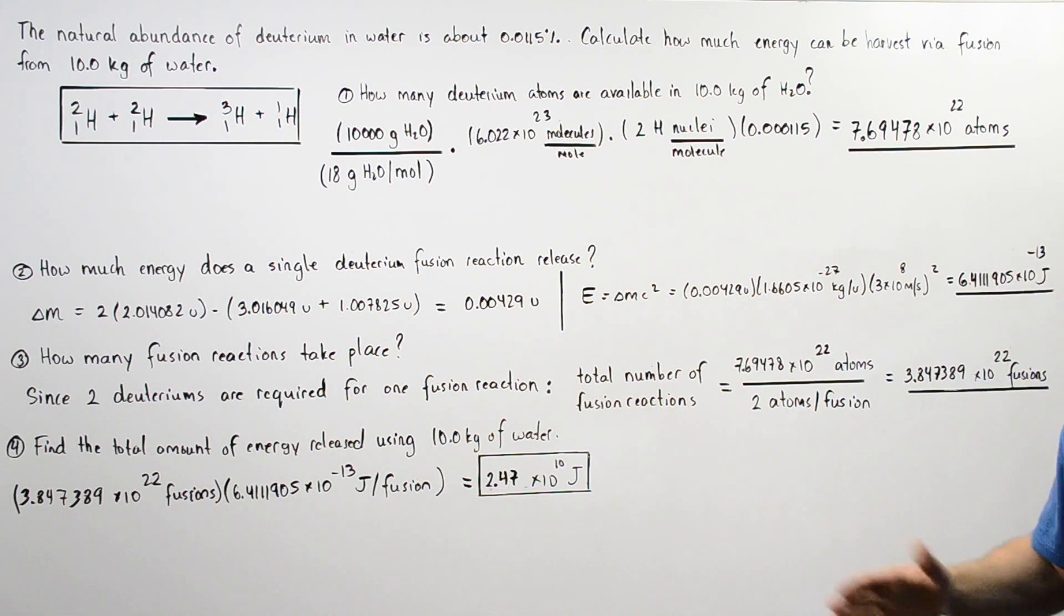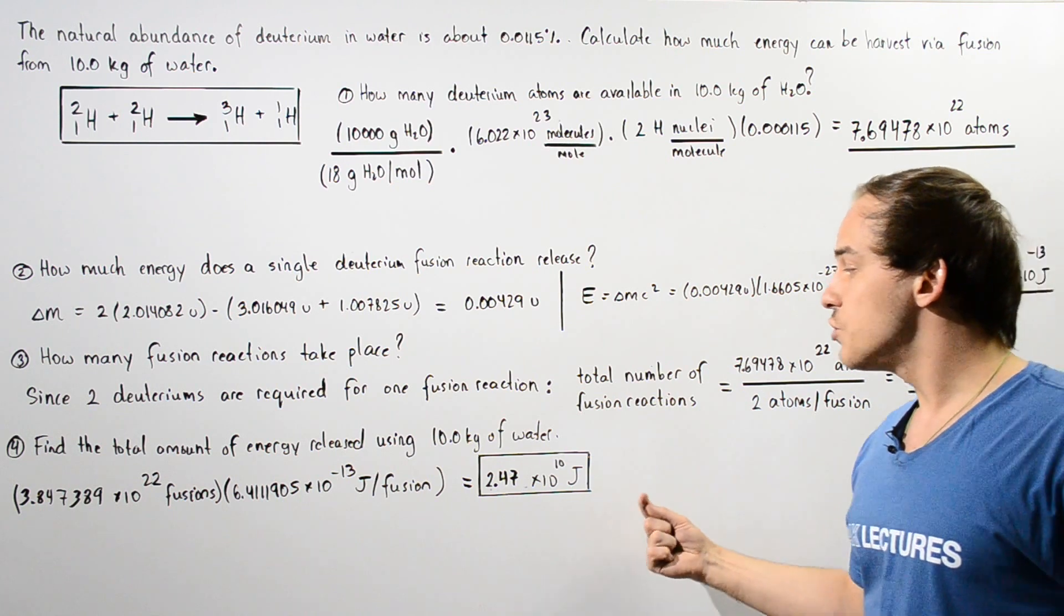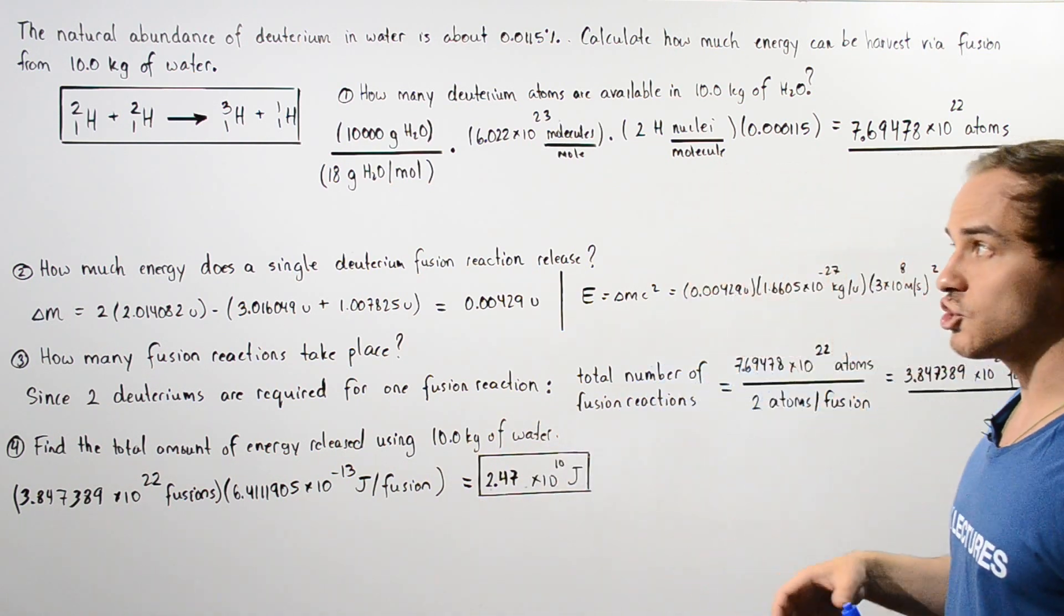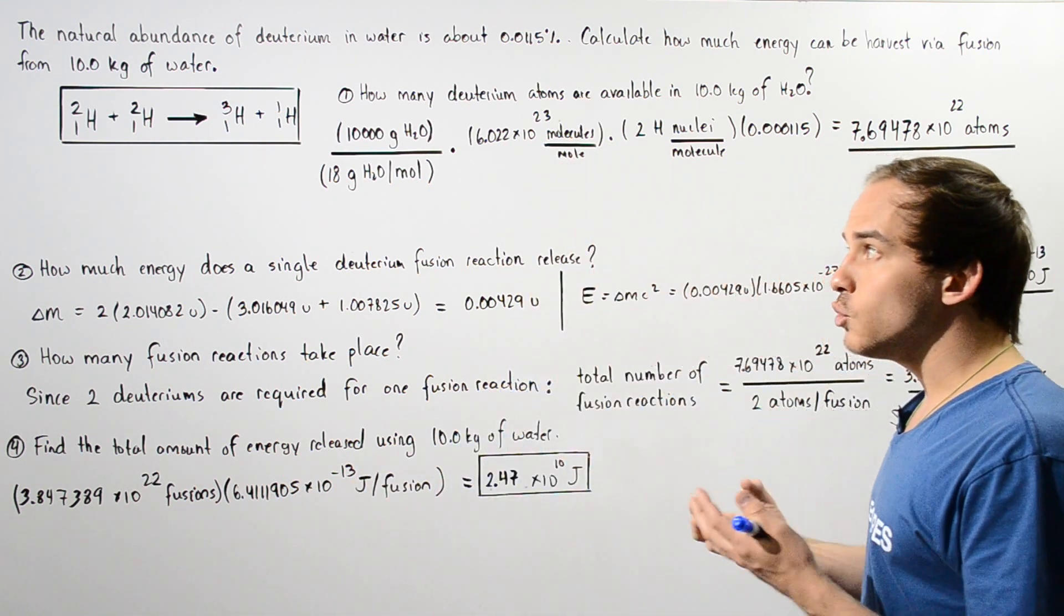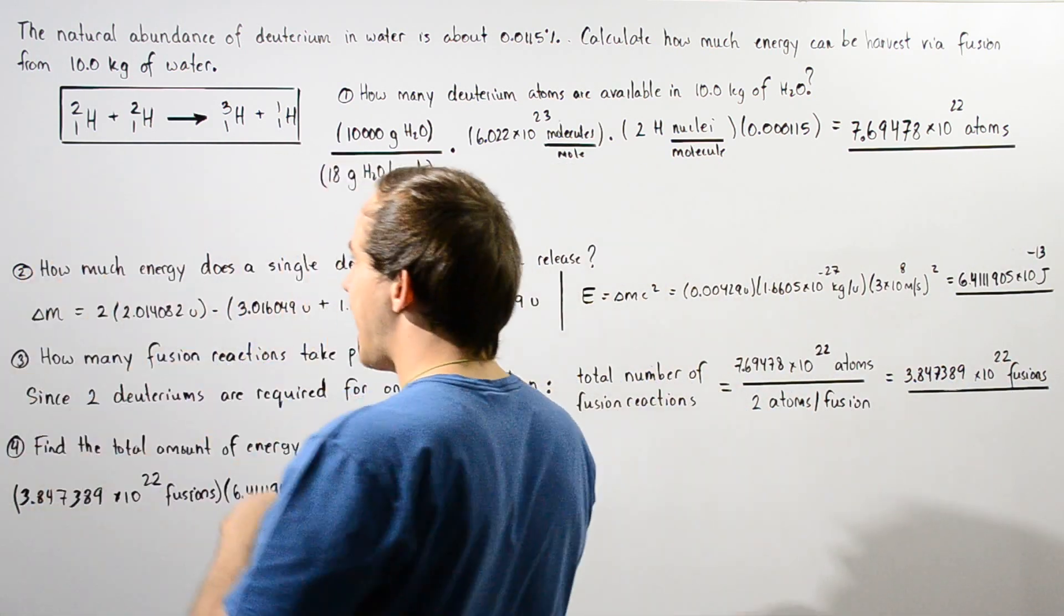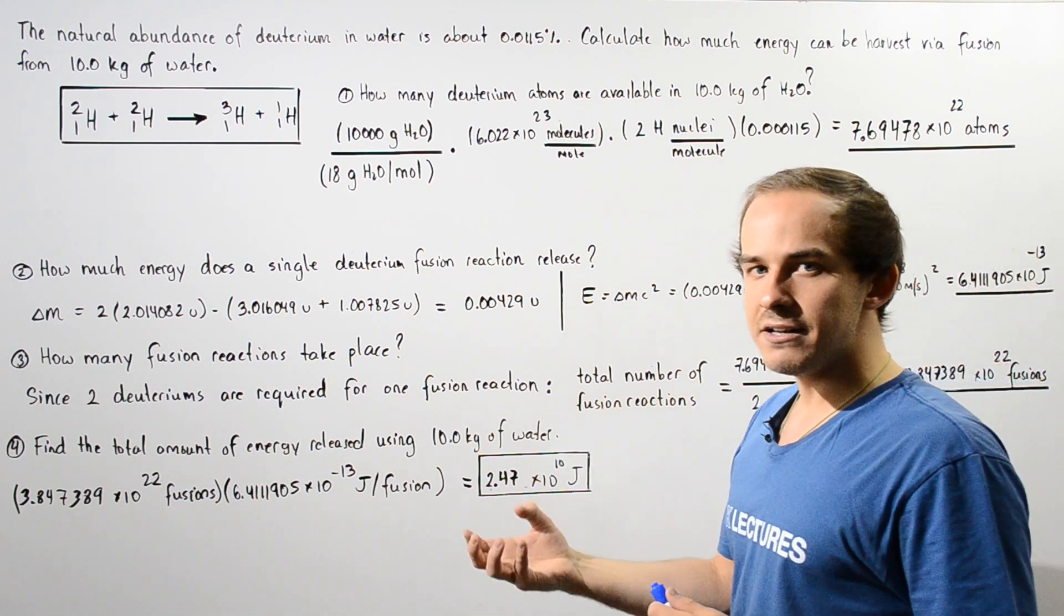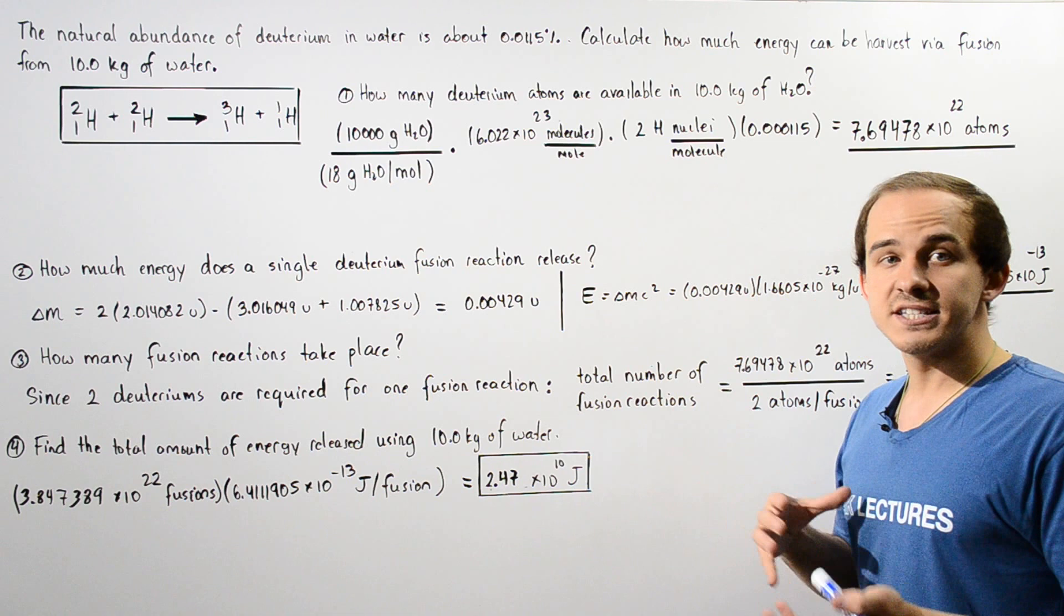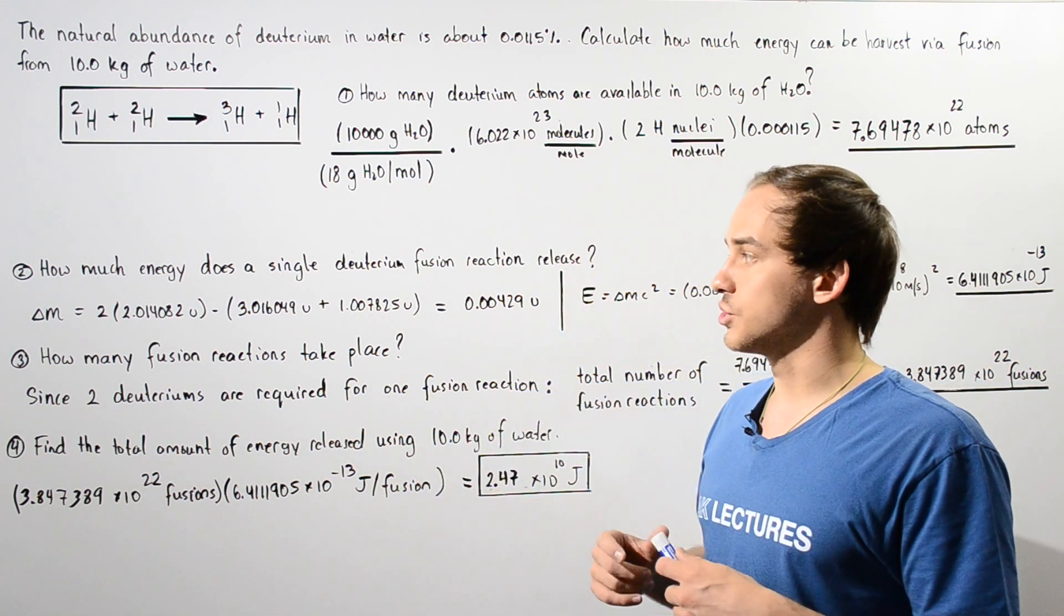So this is a relatively large amount of energy. So we see if we can actually somehow build a nuclear fusion reactor that uses this type of reaction, we can harvest a large amount of energy to power different types of things. For example, we can use it to power cities or large buildings and structures.